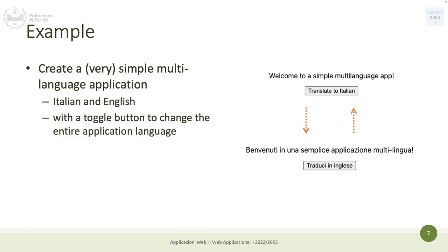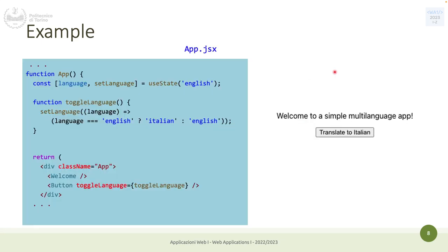Let's imagine a simple application — just one row and a button to translate text from Italian to English. This is very small and could be done with state and props because it's actually one button and some text. But you also have to handle the translation of everything — not only the text in the button but also text in the header and any other text throughout the application.